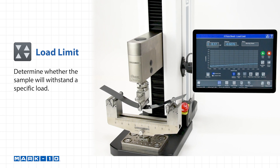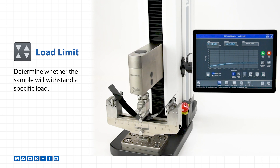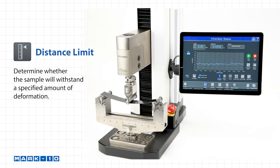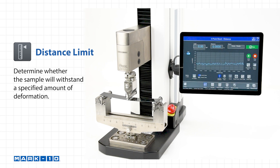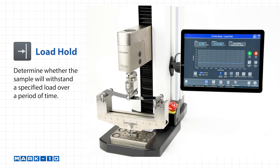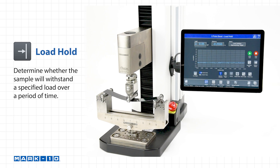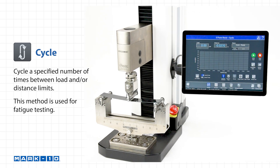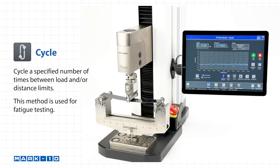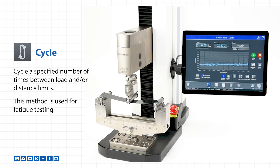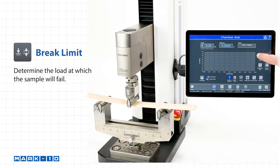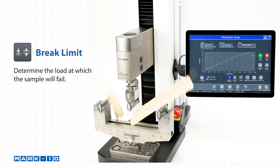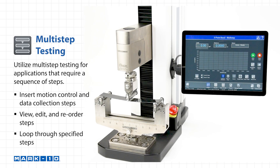Load limit determines whether the sample will withstand a specific load. Distance limit determines whether the sample will withstand a specified amount of deformation. Load hold determines whether the sample will withstand a specified load over a period of time. The cycle test cycles a specified number of times between load and/or distance limits — this method is used for fatigue testing. Break limit determines the load at which the sample will fail.